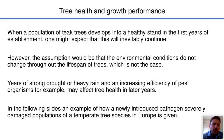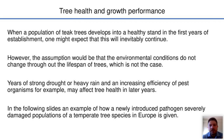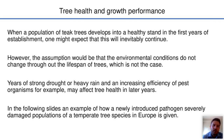When a population of teak trees develops into a healthy stand in the first years after establishment, one might expect that this will inevitably continue. However, the assumption would require that environmental conditions do not change throughout the lifespan of trees, which is not the case. In the following slides, I want to give an example of how a newly introduced pathogen strongly damaged populations of temperate tree species in Europe.